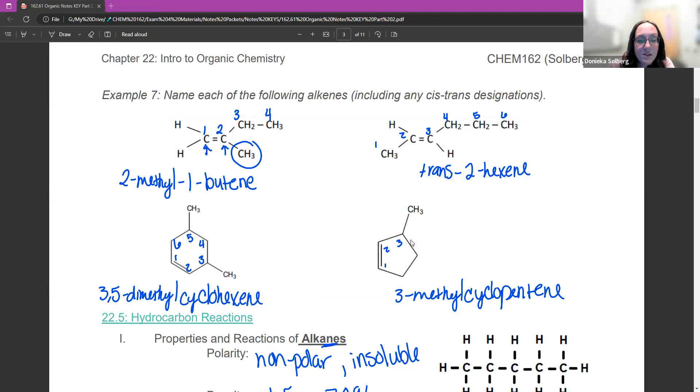Over here, I started counting this way because that gives me the low substituent. Again, I assume my double bond is between one and two. So I just say cyclopentene and I have a methyl on three. So 3-methylcyclopentene.